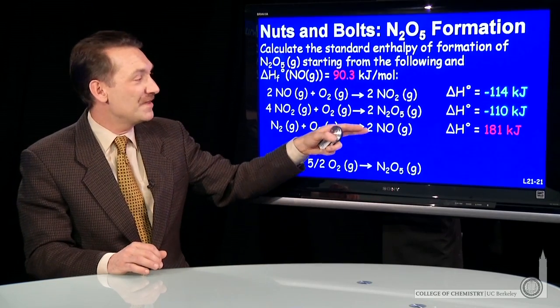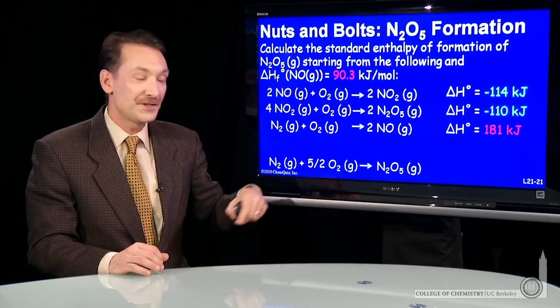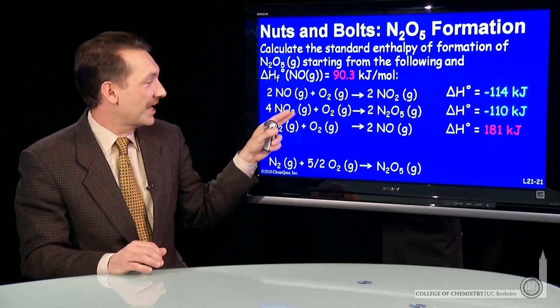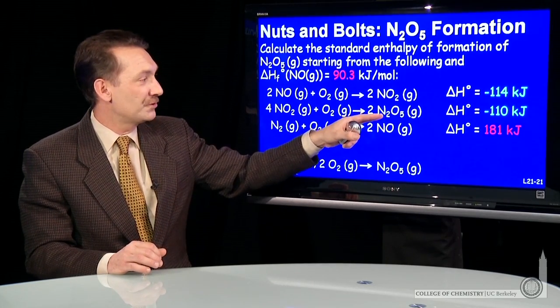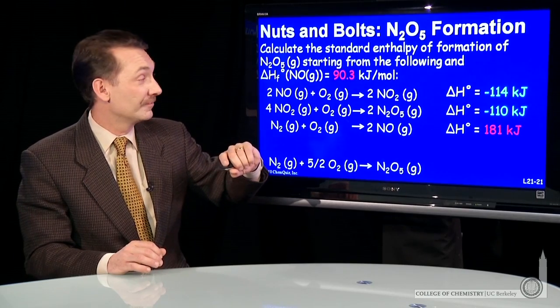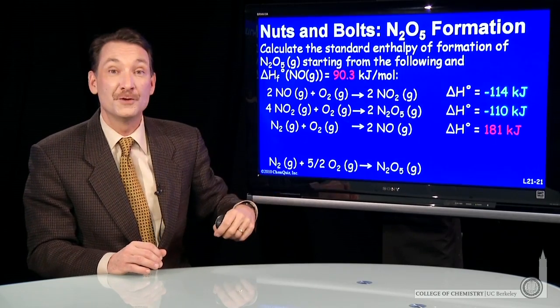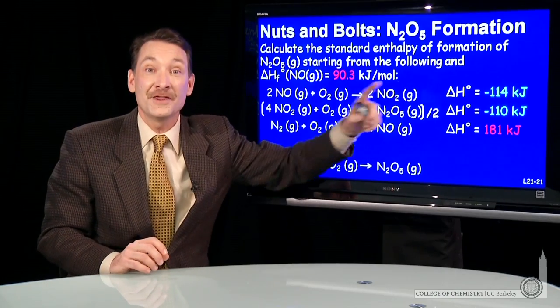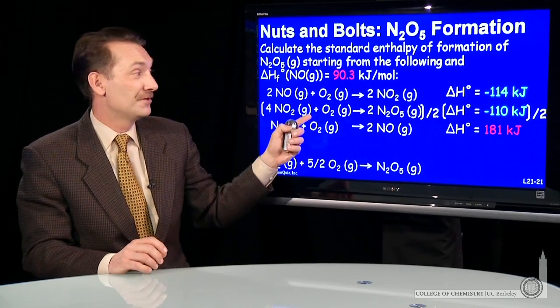So I'd like to sum these to form this one. I notice right off, this reaction here would give me two moles of N2O5 on the product side. I only want one mole, so I'm going to divide this one through by two. If I divide this reaction through by two, I have to divide the enthalpy by two.